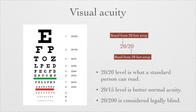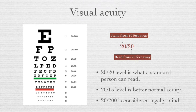Acuity is the sharpness with which a person perceives a visual image. It is a measure of the resolving power of vision. Acuity is measured with a Snellen chart and is expressed in terms of two numbers, like 20/20. The 20/20 level is what a standard person with normal acuity can read from 20 feet away.